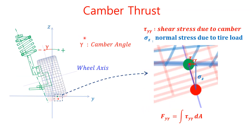The camber thrust can be shown by considering the tire geometry. In the left picture, the green point is any one point on the circumferential area in the tire contact patch. Without tire load, that point is supposed to be at the red point. The right picture shows the details by enlarging the dashed box. We can describe the camber thrust f sub y gamma in terms of shear stress tau sub gamma all over the tire contact patch area a. The resultant force of this integration is the camber thrust.